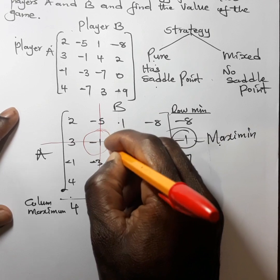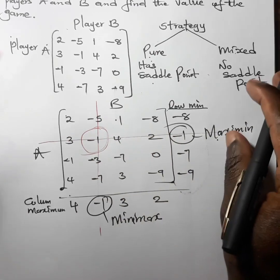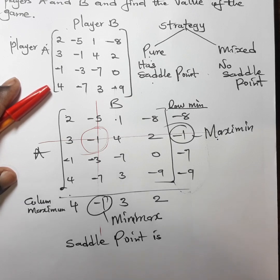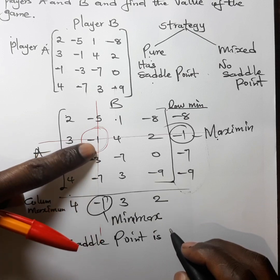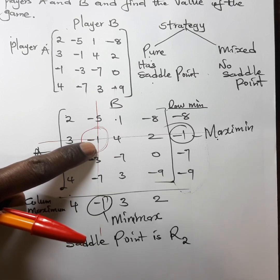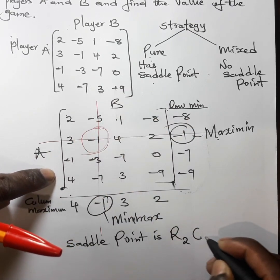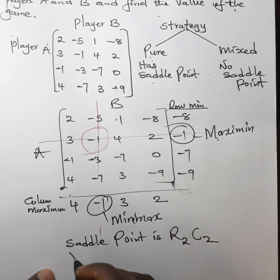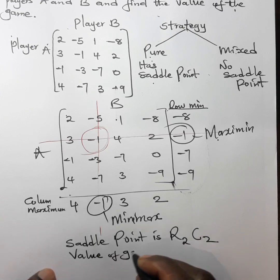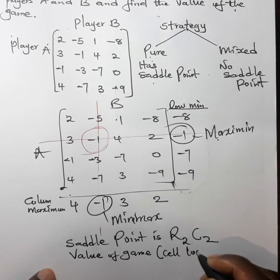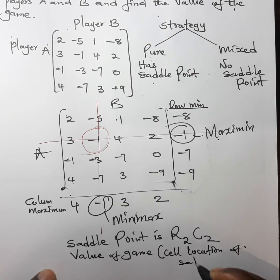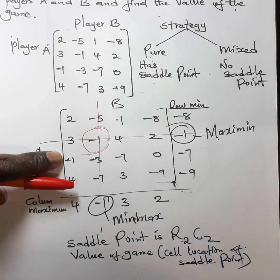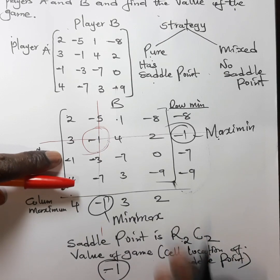This point of intersection is the saddle point. In this case we have the row of the maximin and the column of the minimax intersecting. Our saddle point is at row 2, column 2. Because we need to find the value of the game, the value of the game is equal to the cell location of the saddle point. The cell location of row 2, column 2 is -1. So the value of the game is -1.